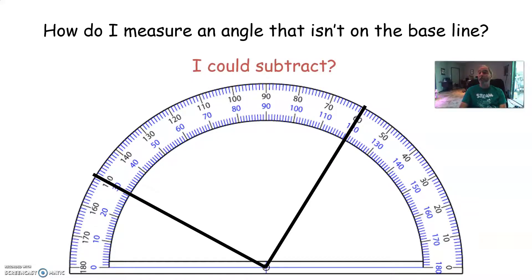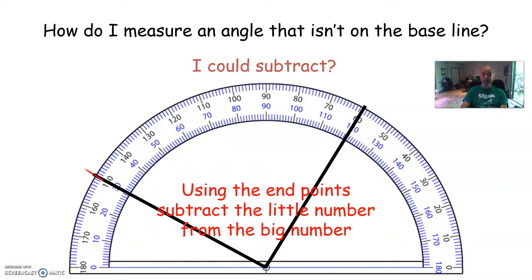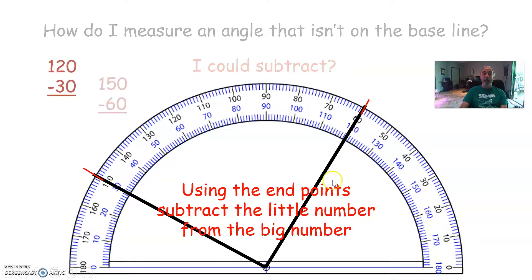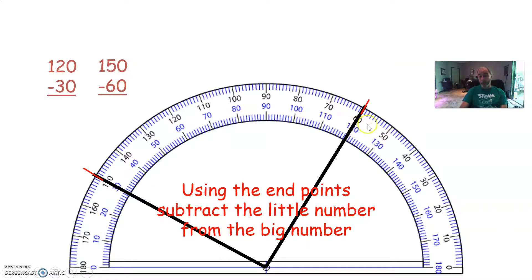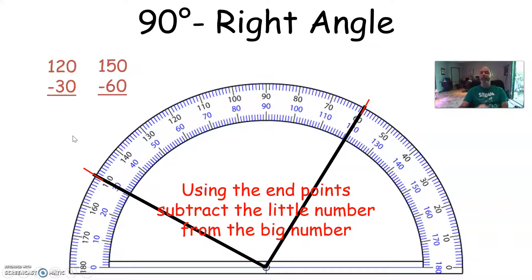I could subtract. All right. Check it out. So make sure when you subtract, the only thing is make sure you use the same band of numbers. It doesn't matter which one you use. You can use the top row. You can use the bottom row. It's totally up to you. But make sure you use the same row. So here I've got 150, and over here I've got 60. So I'm going to subtract 60 from 150. Or if I look here on the blue numbers, I've got 120. And over here, I've got a 30. So I can subtract 120 minus 30. Either way you do it, you're going to get 90 degrees or a right angle.